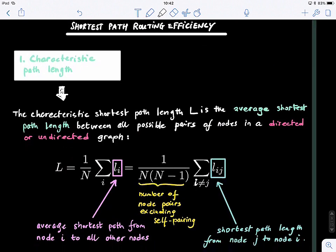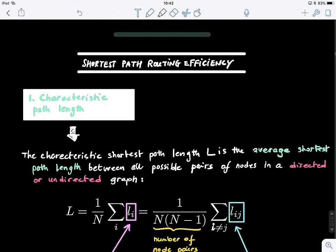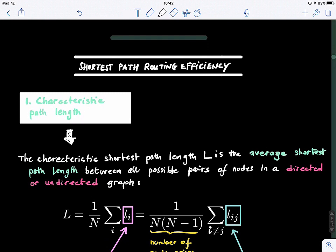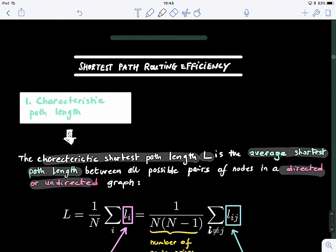There are different measures to consider. The first measure is called the characteristic path length. The characteristic path length L is defined — it's quite simple — as the average shortest path length between all possible pairs of nodes in a directed or undirected graph. This formula applies for both.